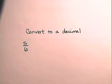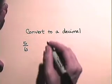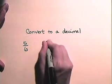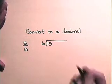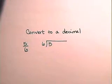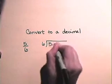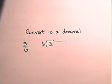In order to convert this to a decimal, we need to divide the numerator by the denominator. So, we are going to divide 6 into 5. Of course, we will need to place a decimal here and bring that decimal up. And we will place zeros after the decimal point until either there is no remainder or the desired degree of accuracy is reached.